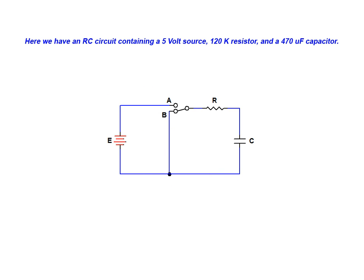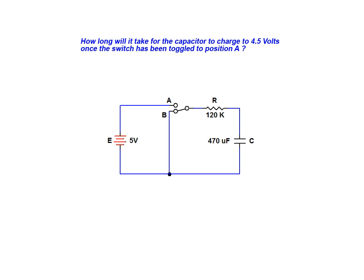In this example, we have an RC circuit containing a 5 volt source, a 120 kilo ohm resistor, and a 470 microfarad capacitor. We are asked to calculate the time it will take the capacitor voltage to reach 4.5 volts once the switch in the circuit has been toggled into position A.